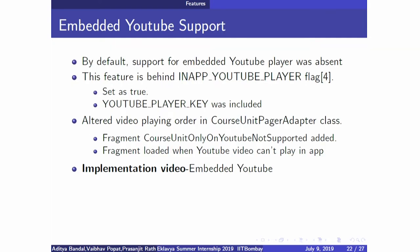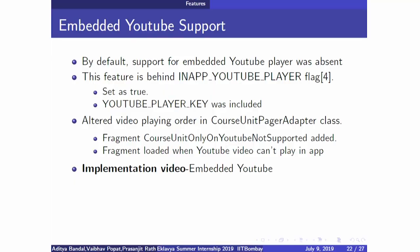For embedding YouTube support in the app, we added the in-app YouTube player flag inside the config.yml file. The ordering of video fragments is important. The class CourseUnitPagerAdapter checks whether a video is downloaded in the app or not. If it is not downloaded, it asks whether to play it on YouTube or in a web browser. If it is downloaded, it checks whether the flag is enabled; only then can that video be viewed inside the app via the YouTube player.